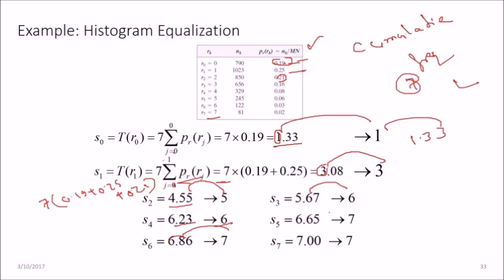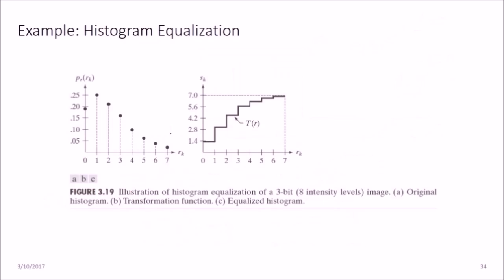Now we have got the value, how we can distribute. Now this is the illustration of histogram equalization of that 3-bit, that is the intensity level image. This was our original histogram, it was not equalized, but now we have the transformation function which we just saw, and now we have the final equalized histogram.